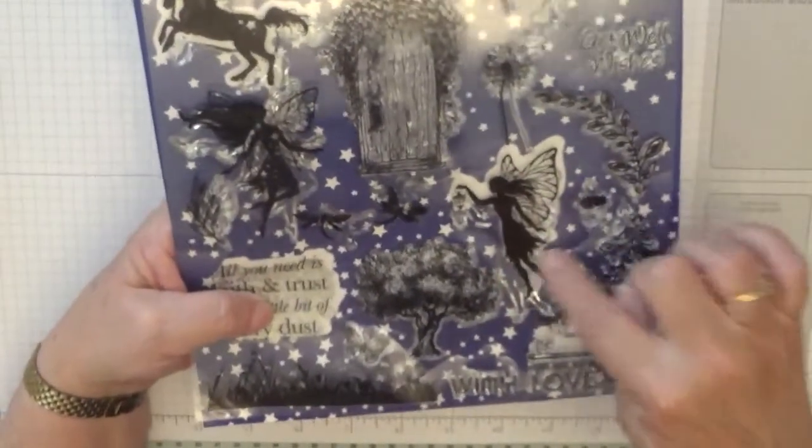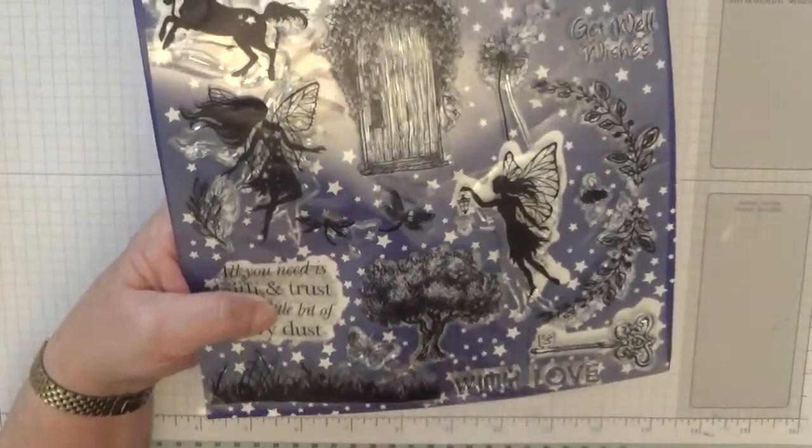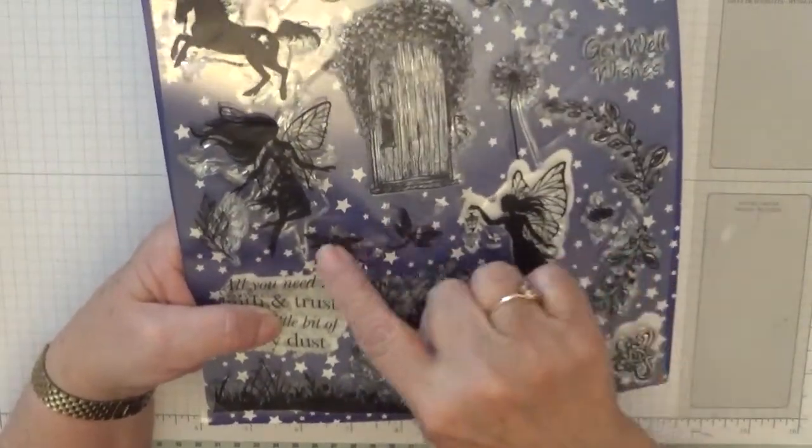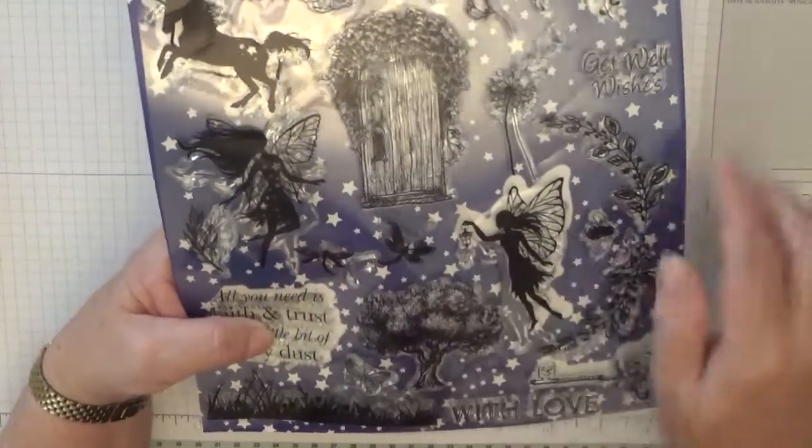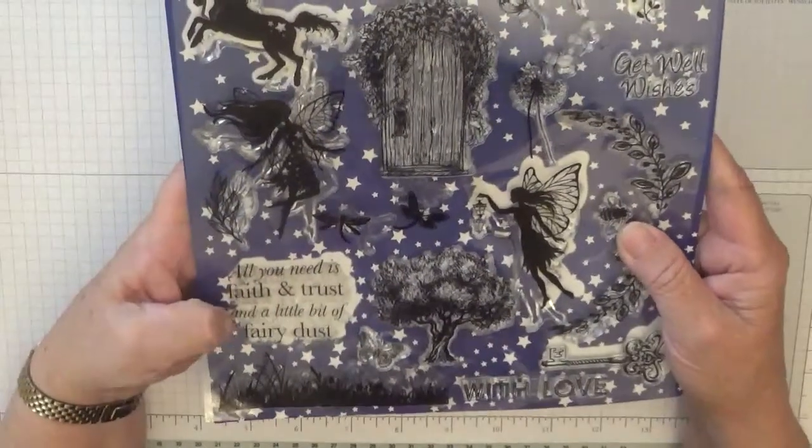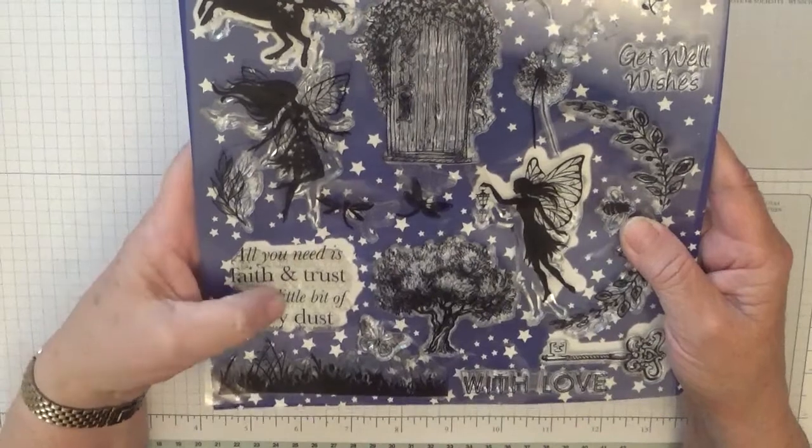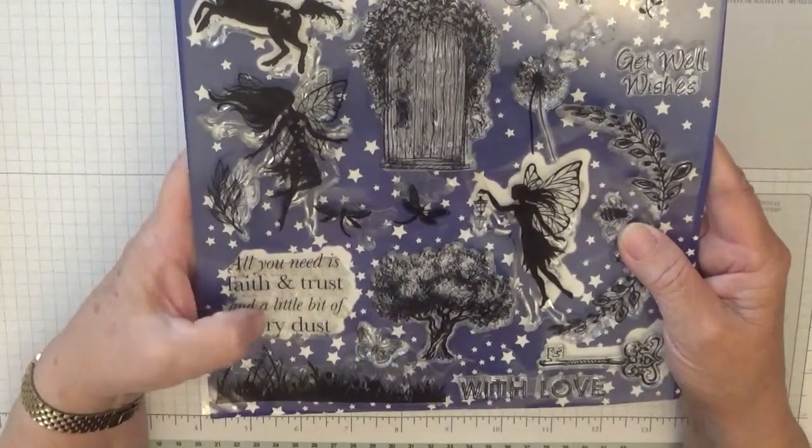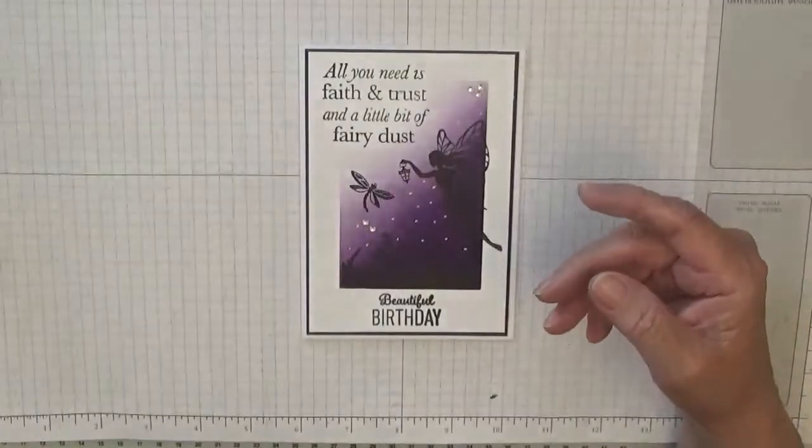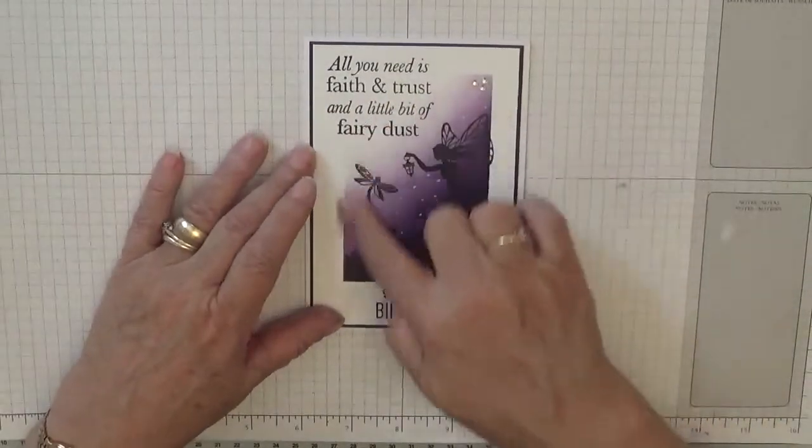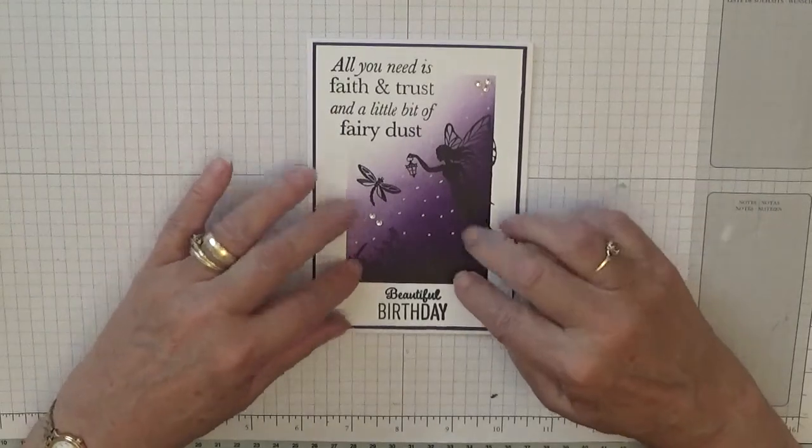With this card, it's all fairies, fairies and trees. We're going to use this fairy, this bit of grassy meadowy thing, the butterflies or whatever they are, and this sentiment: all you need is faith and trust and a little bit of fairy dust. I thought that was quite nice. But first we need to do the sponging on the background.